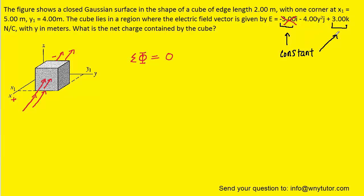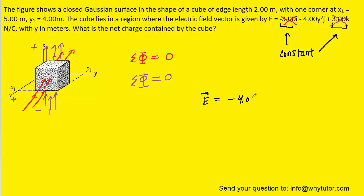The same argument will hold for the k-hat component, which is the z-direction. Again, it has a constant value, so if we call this direction positive z, and then maybe this way negative z, the electric field in that direction would be coming up underneath the cube. However much electric flux enters the cube on the bottom surface will be the same amount that exits the cube on the top surface. So the total electric flux is going to equal 0. And so the only component of the electric field we have to consider is the component in the y-direction, the j-hat component. So we can actually rewrite the electric field by dropping the other components and just writing it as negative 4.00 y-squared in the j-hat component.